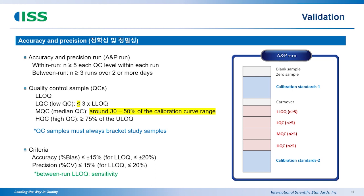For quality control samples, accuracy and precision are determined within-run and between-run. Between-run should be more than three runs over two or more days, and then the average is applied. When starting validation, the calibration curve and QC concentration are common difficulties. Low QC is within three times the LLOQ. For MQC, it's around 30 to 50% of the calibration curve range — close to the middle. For HQC, it should be higher than 75%.